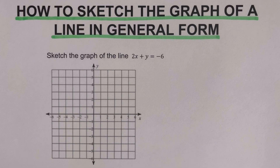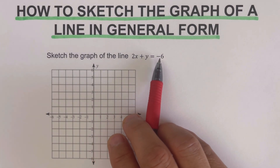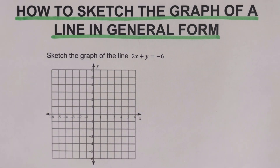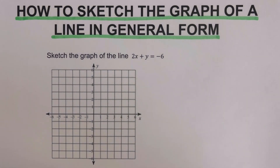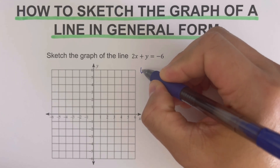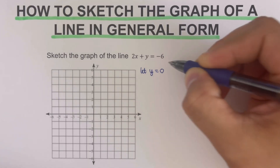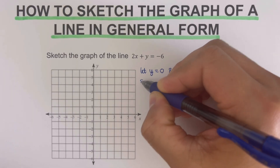Going back to the example: sketch the graph of the line 2x plus y equals negative 6. We're going to use the first method of drawing the general form of a line, which is determining the x and the y intercepts. We will determine the x-intercept first, so we let y equals zero and solve for x.